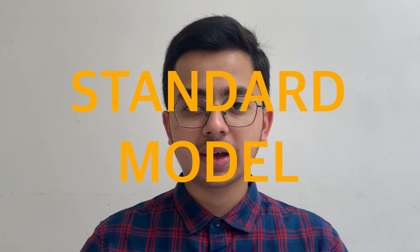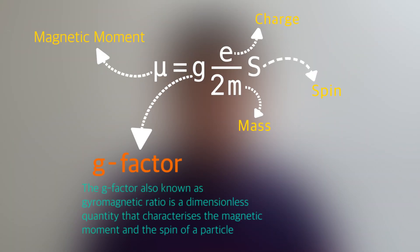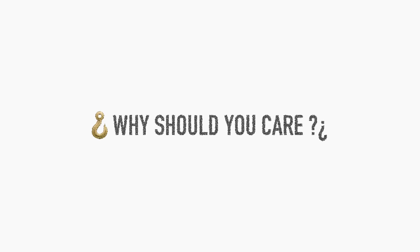The Standard Model of particles predicts to a high degree of accuracy what this change should be. We measure a quantity called the g-factor, which tells us how much a muon would wobble. Now here comes the big thing.